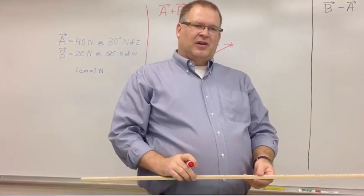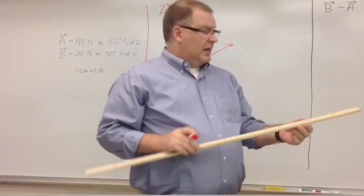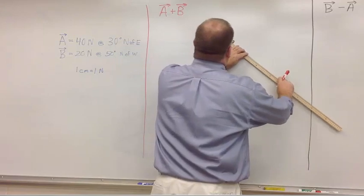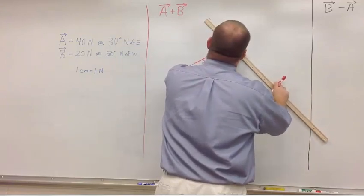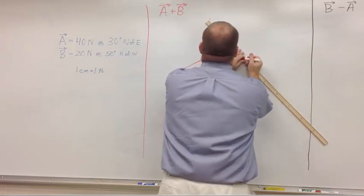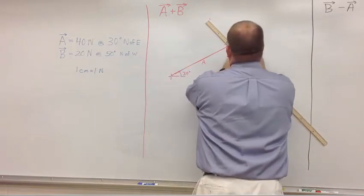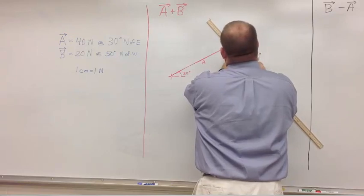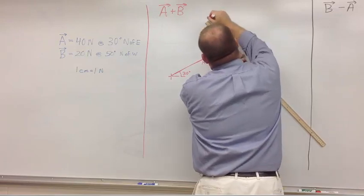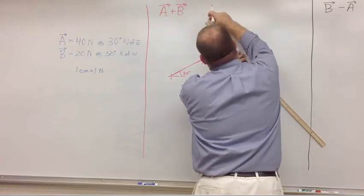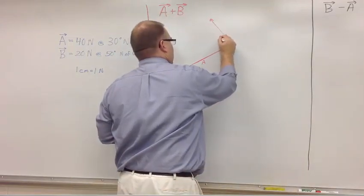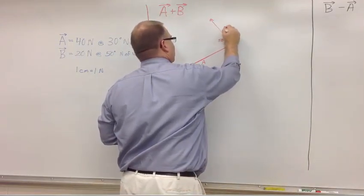There's my 50 degree mark. I'm going to go ahead and draw 20 centimeters. And because I have 20 newtons, I'm going to draw 20 centimeters. So 20 centimeters lined up through the 50 degree mark, 50 degrees vector B.